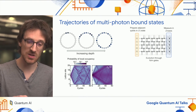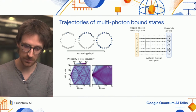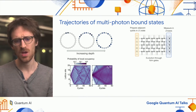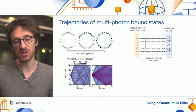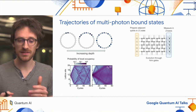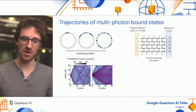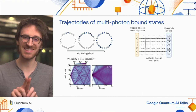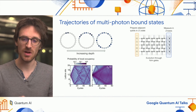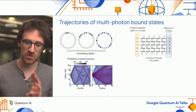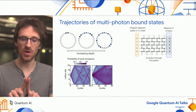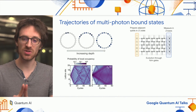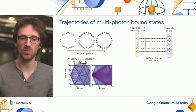There is also a second cone that moves much slower. This is the cone of excitations staying together—when we measure in Z, we see two excitations close to each other, just as we had prepared the initial state.